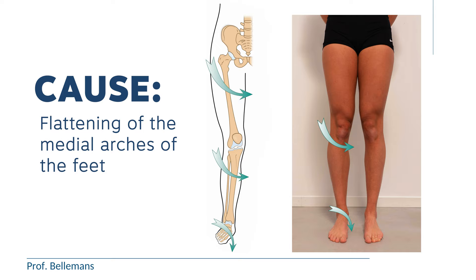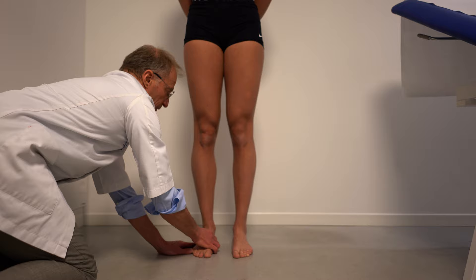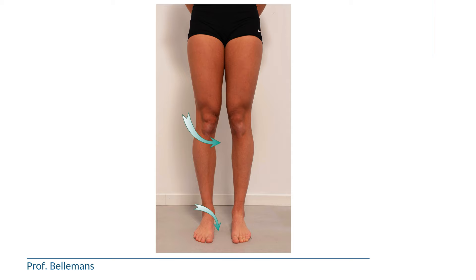The most common cause of patellar endotorsion is flattening of the medial arches of the feet, or so-called flat feet. That is relatively easy to detect. When you lift the medial arch of the foot you will note that the inward position of the kneecap instantaneously resolves. The reason is that when the medial arch of the foot is insufficient or collapses, the leg and the knee rotate inward, and usually the external rotator muscles higher up at the hip are unable to compensate for that internal rotation.